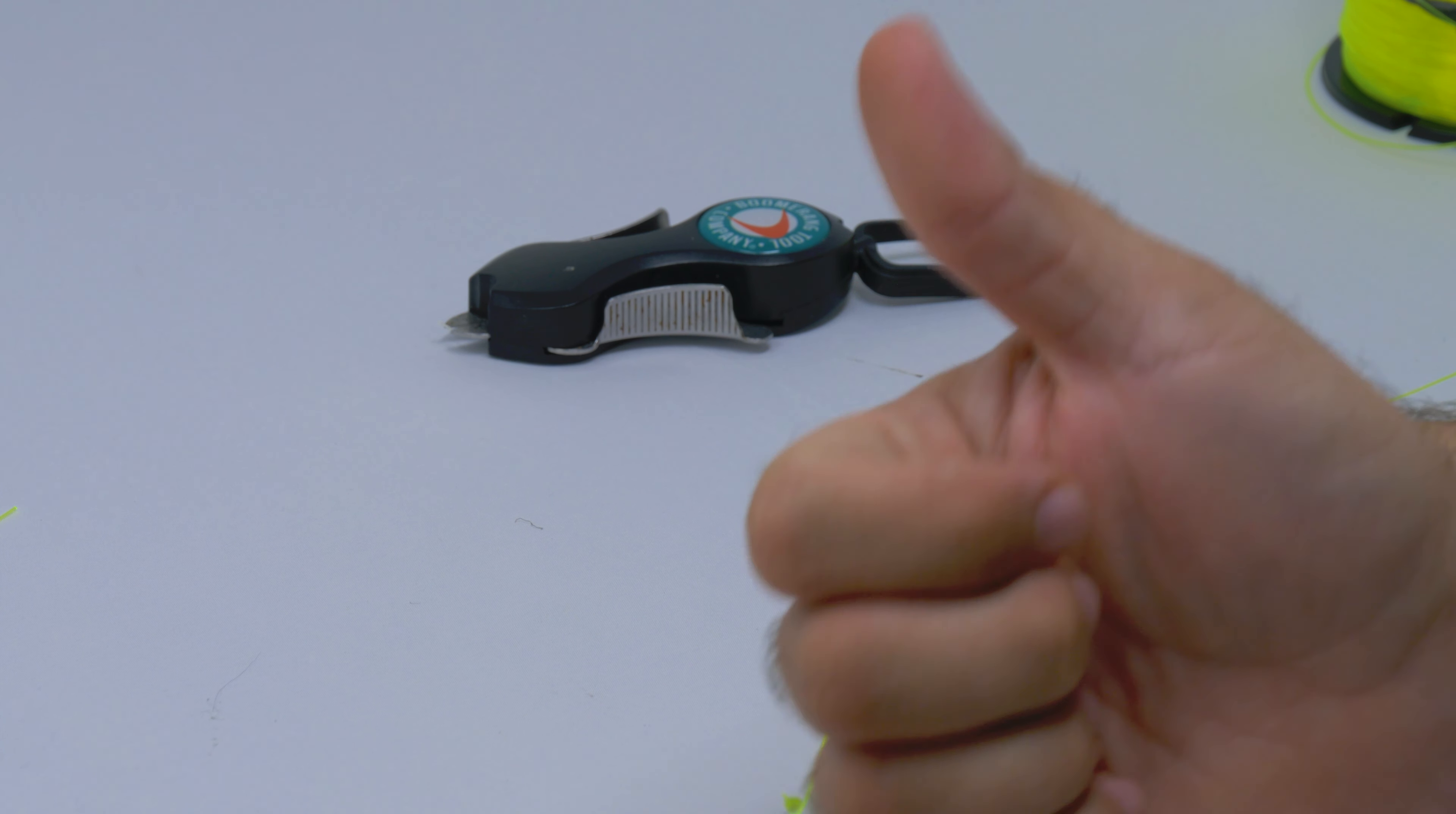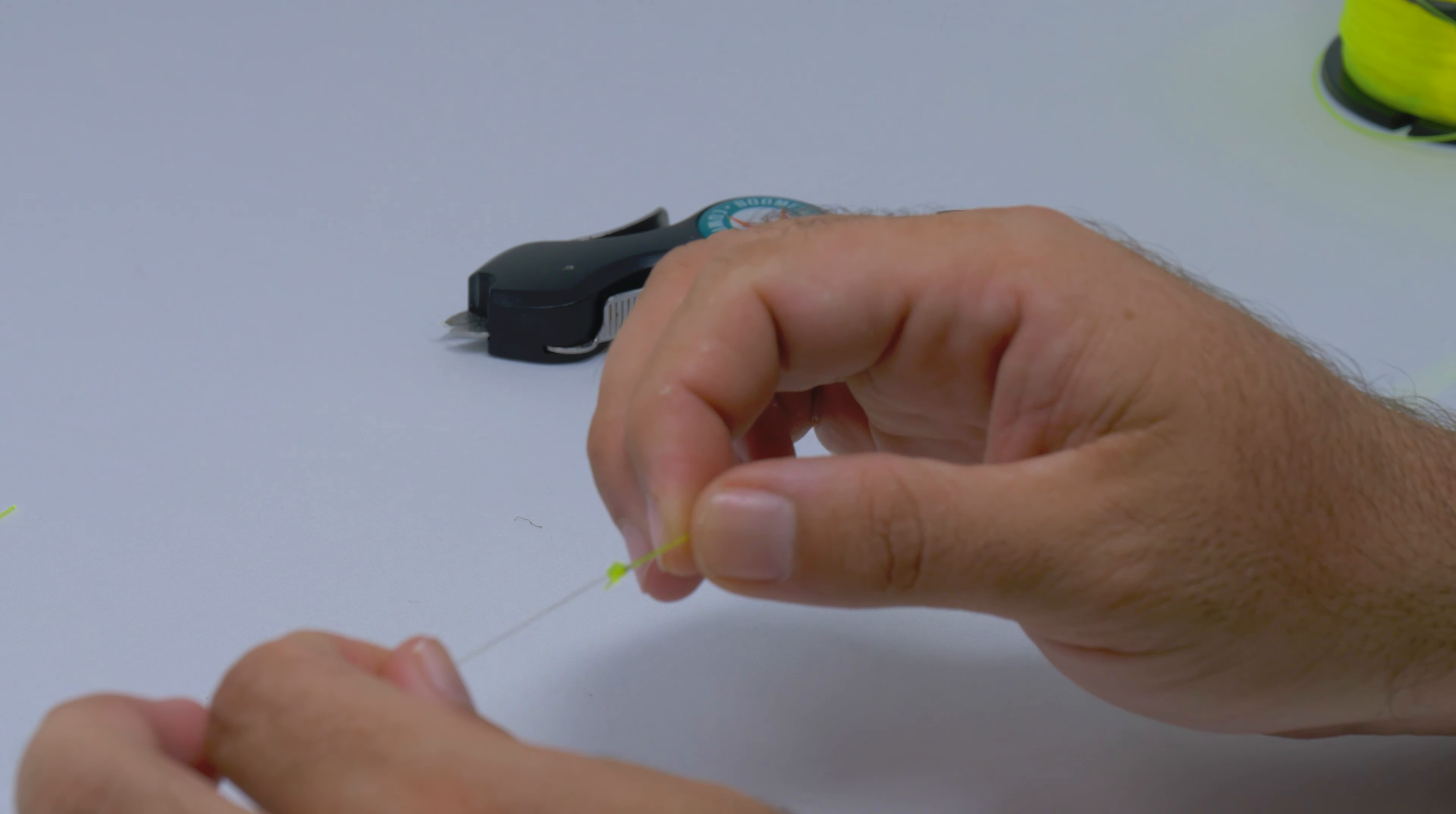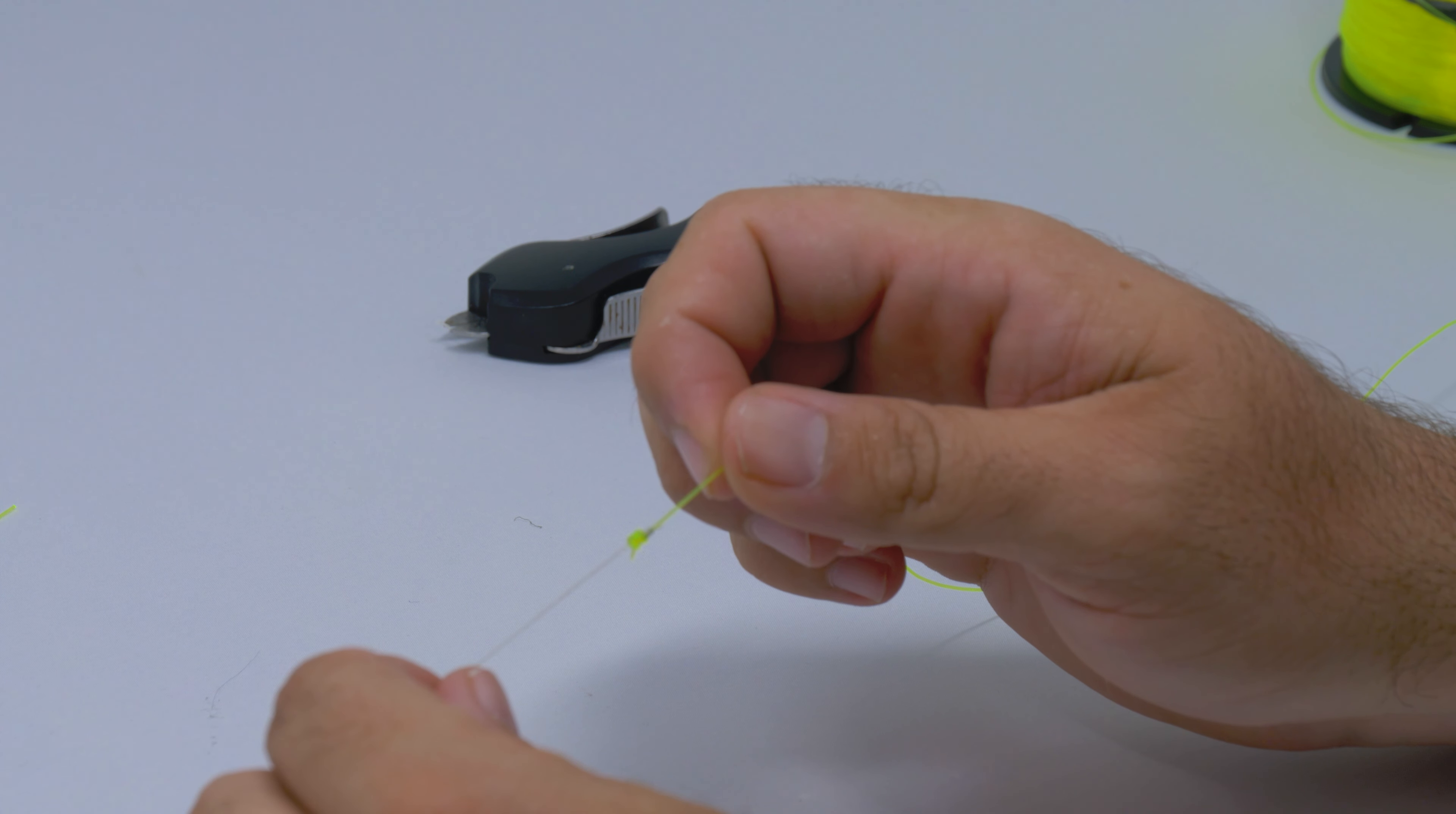If you like this tutorial, please give a thumbs up, comment below, and subscribe. Let me know what knot do you use to conjoin your mainline to your leader. Some other popular choices are the Alberto knot or the FG knot. But until next time guys, we'll see you on the water.